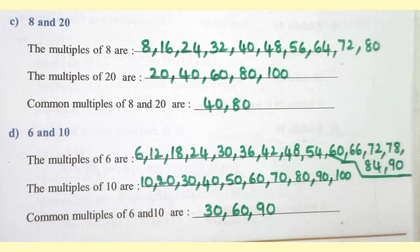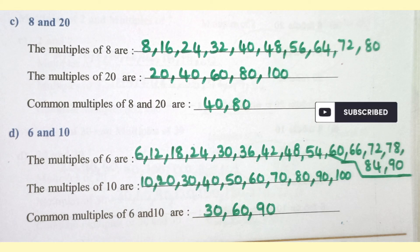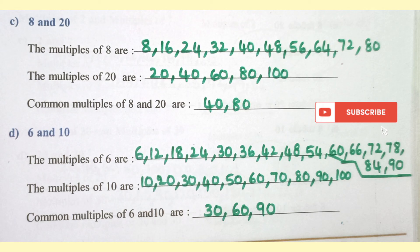Multiples of 15 are 15, 30, 45, 60, 75, 90, 105, 120. Multiples of 8 are 8, 16, 24, 32, 40, 48, 56, 64, 72, 80. Multiples of 20 are 20, 40, 60, 80, and 100. Common multiples of 8 and 20 are 40 and 80.